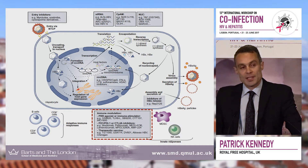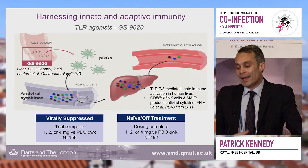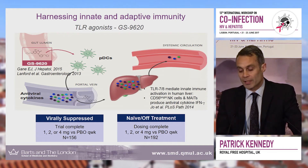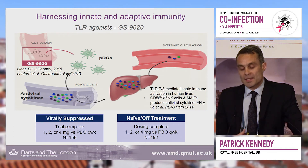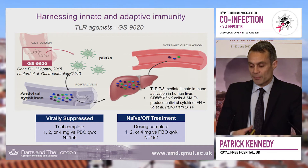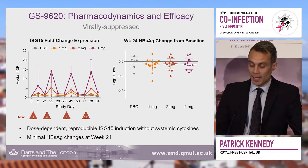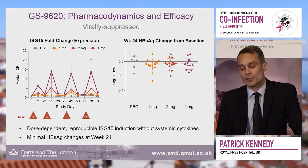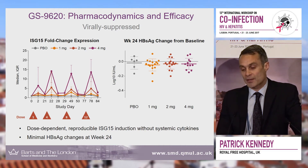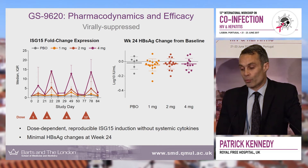What about immune modulation? This is probably one of the areas we're most interested in at present. I'll start with the TLR7 agonist GS9620, which is at phase two. Unfortunately, this has been less than expected in terms of meeting our hopes. While it has the ability to modulate the innate immune response — specifically around CD56 NK cells and the macrophage population — what we saw was very specific dose-dependent reproducible ISG15 induction, but very little change in baseline surface antigen. So the level of reduction we anticipated from TLR7 is not being seen.